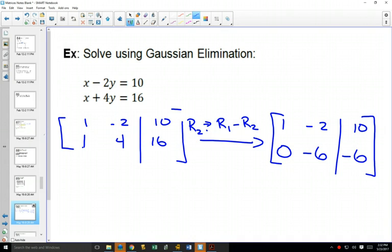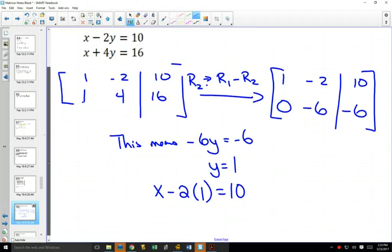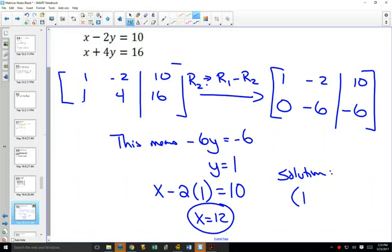We have now changed this to row echelon form, where we got a zero in that bottom corner. This means negative six y equals negative six. Is that easy to solve for? Yes. Y is equal to one. Once you have y equals one, you can go to your row one and say x minus two y has to equal ten. And then, what does that make my x? X is equal to twelve. So our solution, if we write it as a point, is twelve comma one.